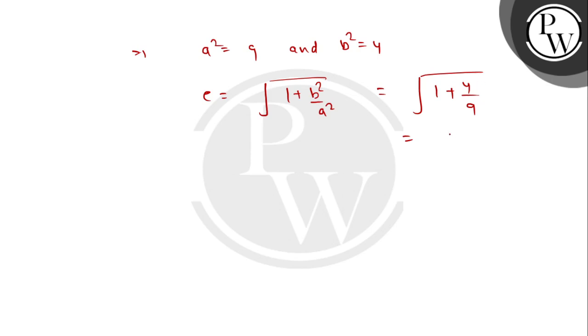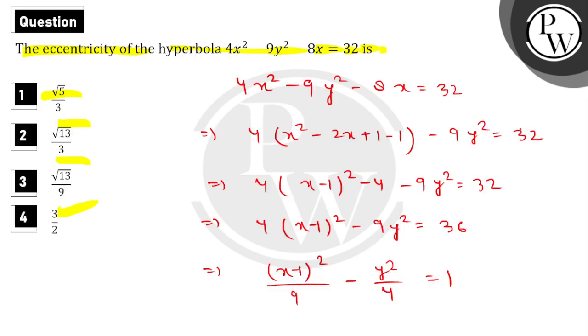9 plus 4 equals 13, so e = √(13/9) = √13/3. This is our eccentricity.